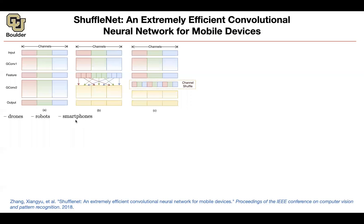The applications we know — it's about robots, drones, smartphones, etc. So how do you implement channel shuffle?